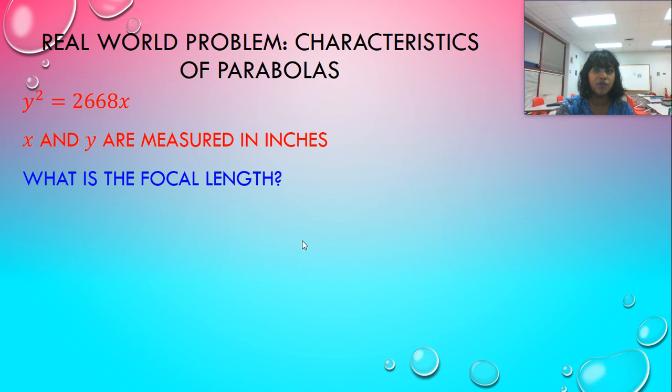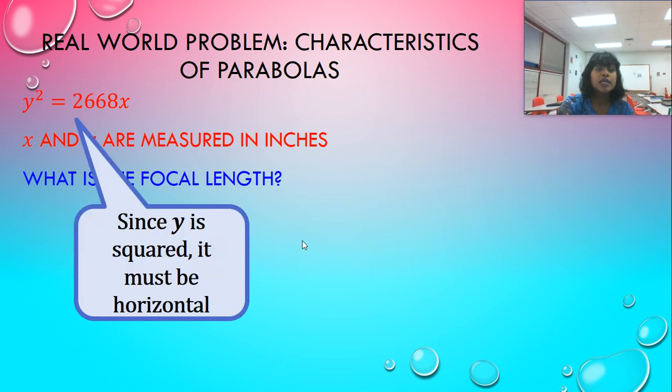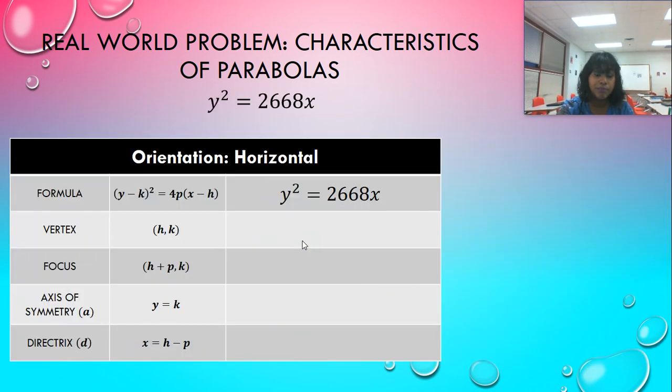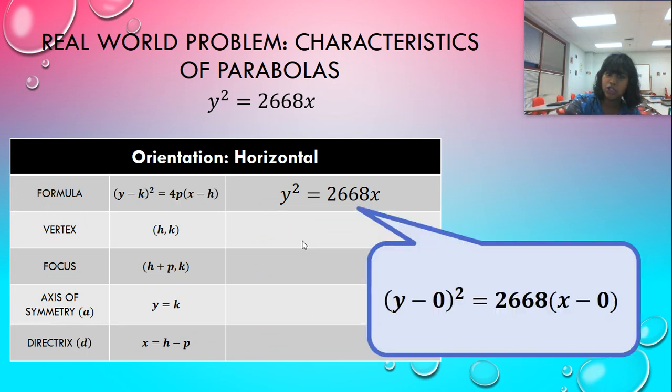So I pulled out just the important information, Y squared, what the units are, and what we're searching for. Since it is Y squared, it must be horizontal. So I'm going to grab my horizontal formula, and I'm going to plug this in. We have this information, but it doesn't quite look like my formula. So I can write it to account for all this information.